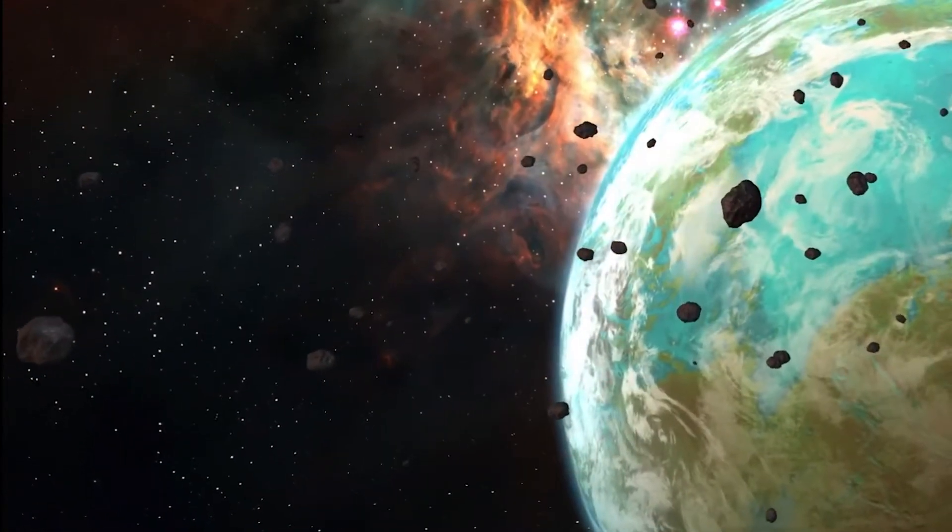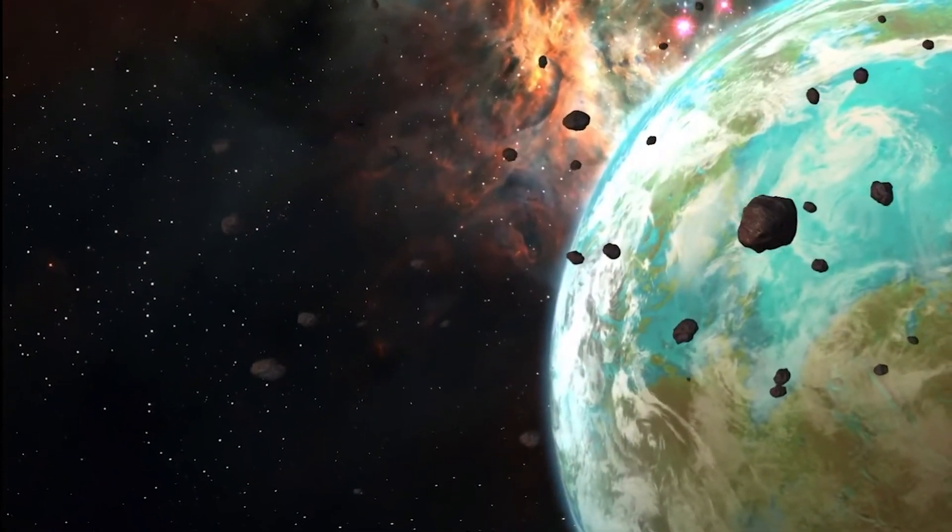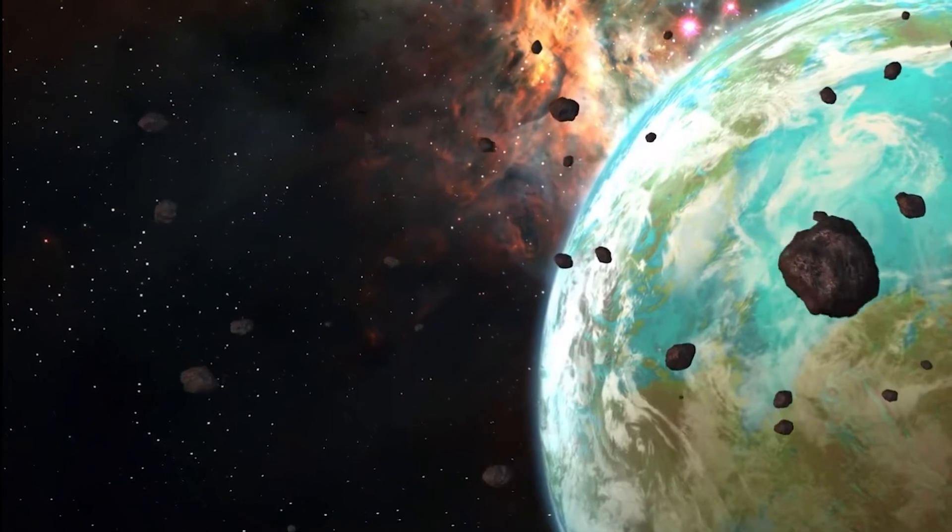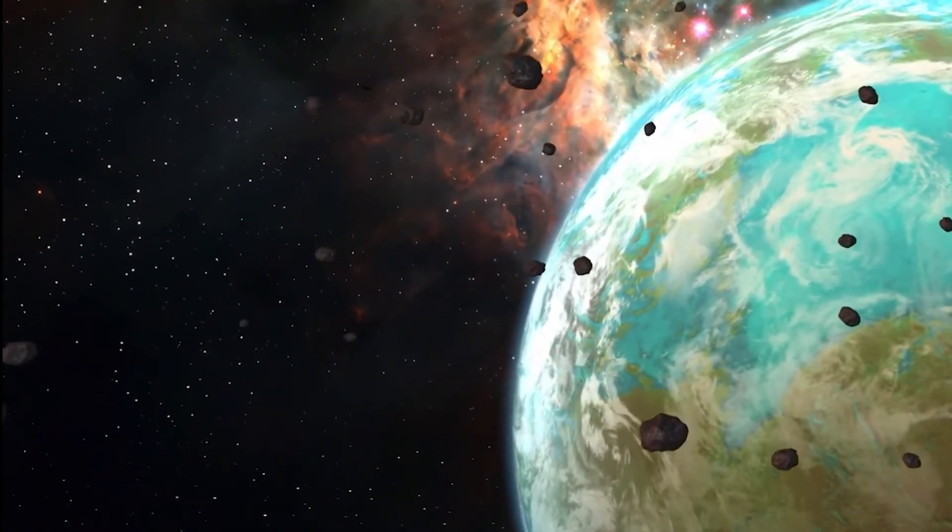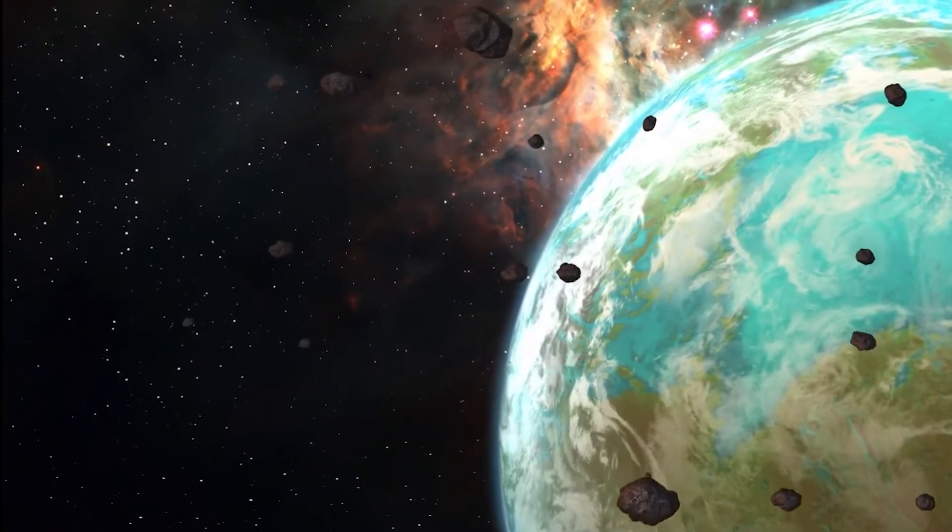KEPLER-10c lies 560 light years from Earth in the constellation Draco, where it orbits KEPLER-10 with a year of 45 days. It is a planet that weighs 17 times as much as Earth and is more than twice as large in size. Planet formation theorists are challenged to explain how such a massive world could have formed. It is actually so unusual, it has opened up a new category of exoplanets called Mega-Earths.